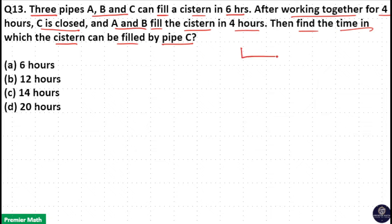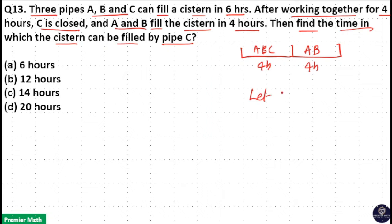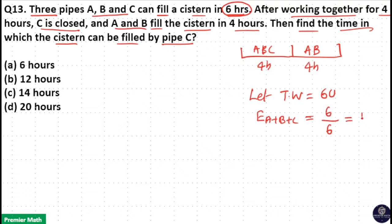Here, A, B and C first work together for 4 hours. Then C is closed and the remaining work is completed by A and B in 4 hours. Let us consider the total work as 6 units. Then the efficiency of A, B and C together is work completed divided by time taken — 6 units divided by 6 hours — which equals 1 unit per hour.